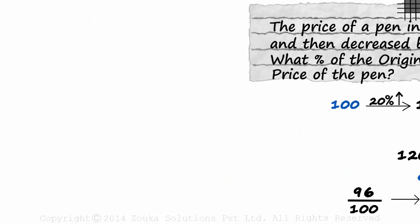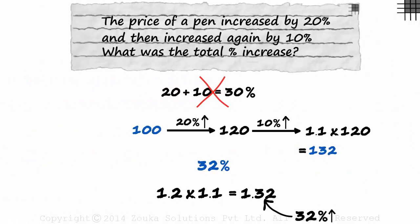And if we look at the previous example, what does this 1.32 tell us? It tells us that it is a 32% increase and that the current price is 132% of the original price.